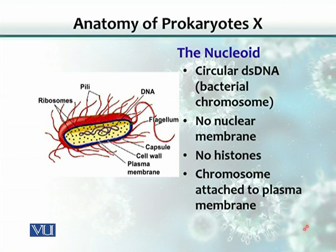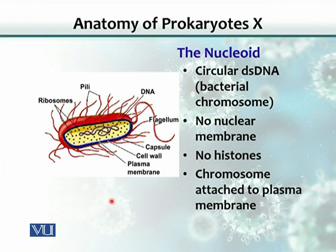The nucleoid is a nucleus-like structure which contains the DNA. The DNA in prokaryotes is mostly circular, double-stranded DNA. There is no nuclear membrane and there are no histones. Histones are proteins present in eukaryotic cells because eukaryotic cells have lots of DNA that must be packaged in a small space. Compared with eukaryotic cells, prokaryotic DNA is not as large, so those proteins are not really needed.